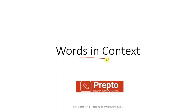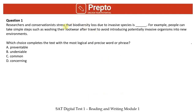Words in context is basically fill-in-the-blanks where you fill in a word based on the context of the whole paragraph. The Prepto way: first, read the question so we know what question type it is. This is 'completing the text,' so it's words in context. Since it is words in context, while reading you will not pay too much attention on proper nouns — you'll pay more attention on verbs, adjectives, and transition words.